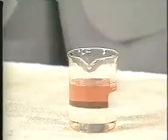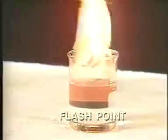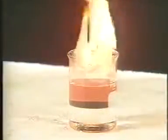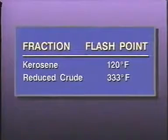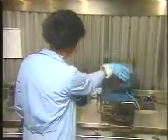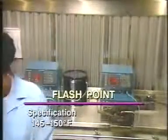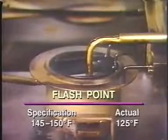Most petroleum-related products release flammable vapors. The lowest temperature at which these vapors ignite is known as the flashpoint of a product. Flashpoint is an important specification for some distillation products. Products that contain mostly light components release flammable vapors at a lower temperature than heavy hydrocarbon products. Therefore, a relatively light product like kerosene will have a lower flashpoint temperature than a heavy product like reduced crude. Specifications on this product call for a flashpoint between 145 and 150 degrees Fahrenheit. The actual flashpoint is 125 degrees, meaning this product is off specification because it contains too much light material.